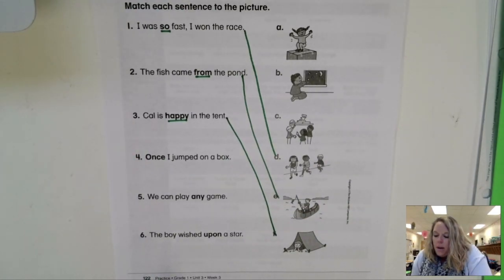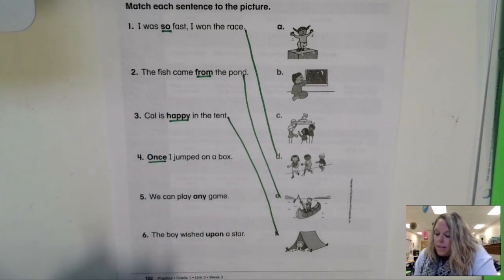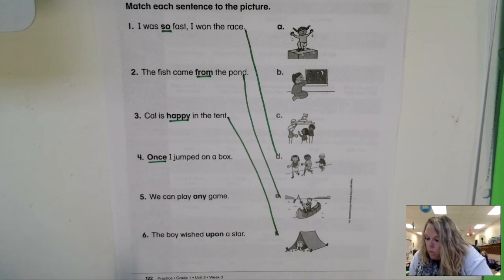Now these last three are going to be your job. I will read them, and you're going to put the line to the correct spot. Number four says, once I jumped on a box. Once I jumped on a box.